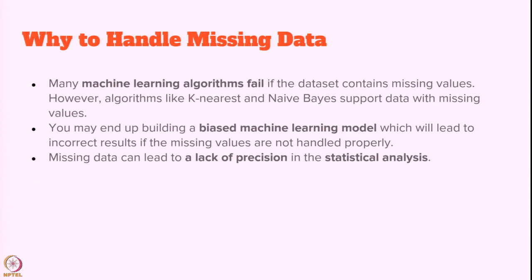To understand how to handle missing data, we need to know why we must handle it. Most machine learning algorithms fail if the dataset contains missing values. Some algorithms like k-nearest neighbor and Naive Bayes can work even with missing data, but most fail. Also, you may end up building a biased model that does not give accurate or optimal results, with reduced precision, accuracy, or recall due to large amounts of missing data.